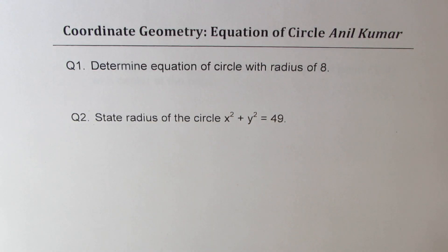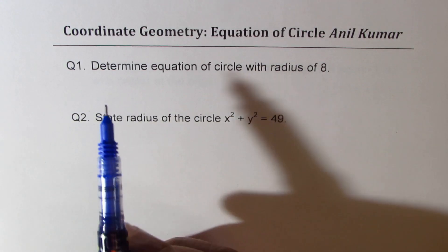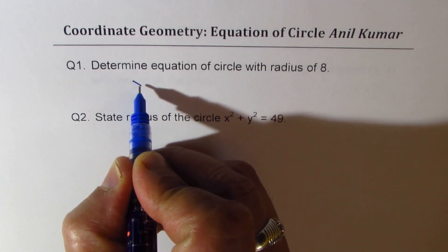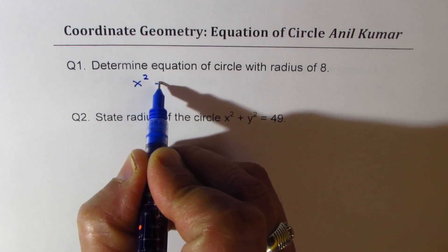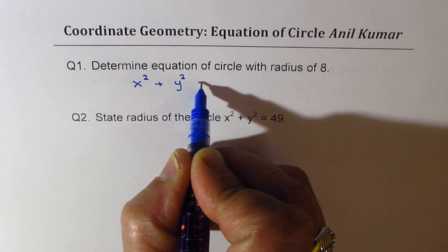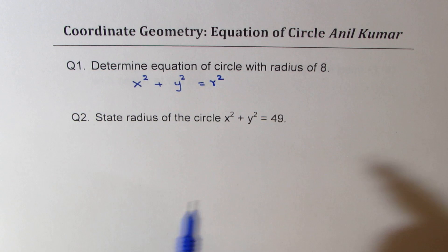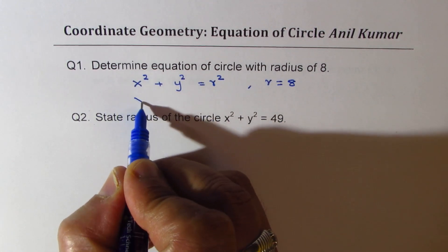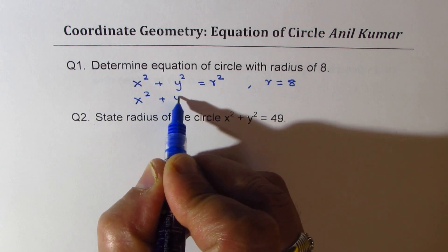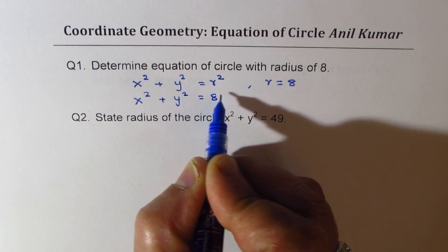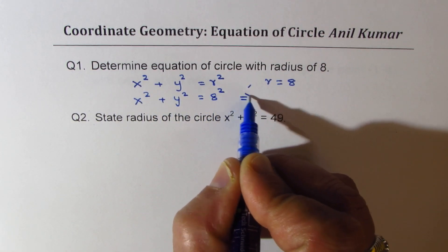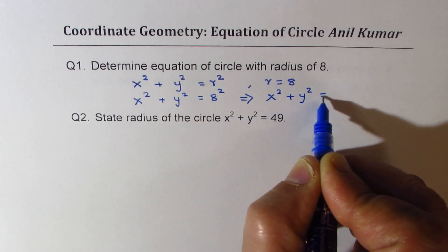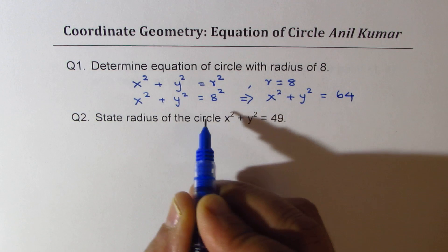Question number one: determine the equation of a circle with radius of 8. We know the equation of the circle is x squared plus y squared equals r squared. Since r is equal to 8, we write this as x squared plus y squared equals 8 squared, or x squared plus y squared equals 64.